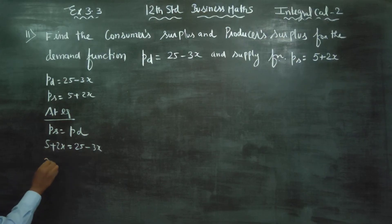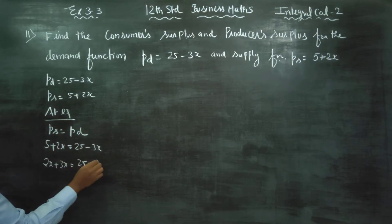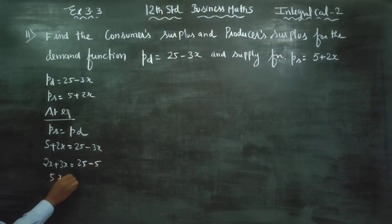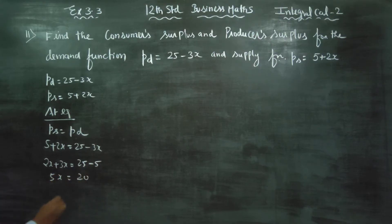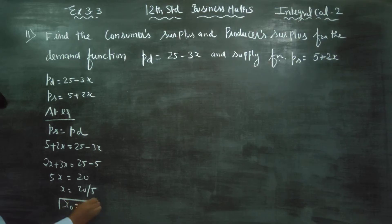Minus 3X moves to the other side as plus 3X. 25 minus 5 gives us 5X equals 20. Therefore X equals 20 divided by 5, so X0 is equal to 4.